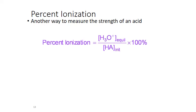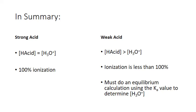Now we can calculate pH: the negative log of 1.9 × 10⁻³ gives a pH of 2.72 for this acetic acid solution. To summarize: strong acids experience 100% ionization, and we can assume hydronium ion concentration equals the initial acid concentration. Weak acids do not ionize completely — the hydronium ion concentration will be less than, and in many cases much smaller than, the initial acid concentration. To find that hydronium ion concentration, we perform an equilibrium calculation using the acid ionization constant Ka.